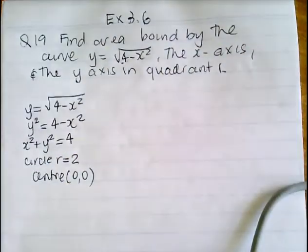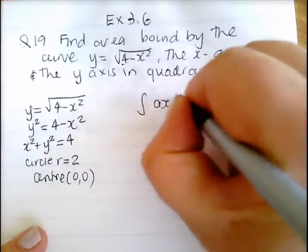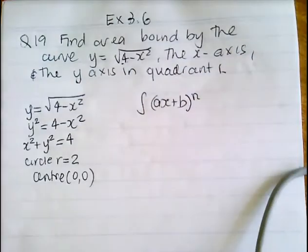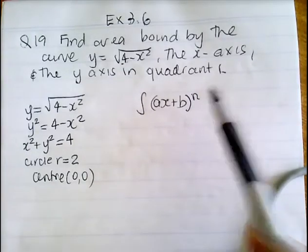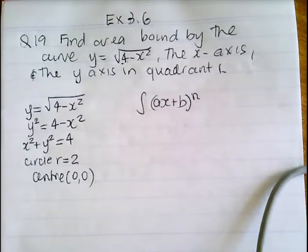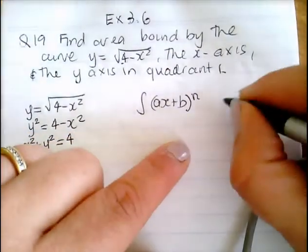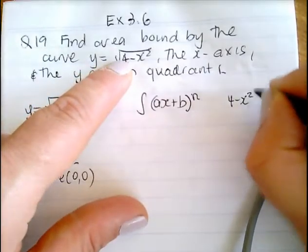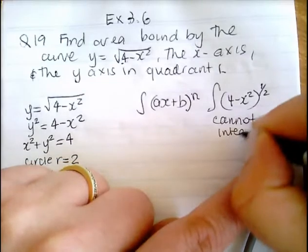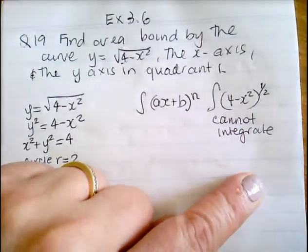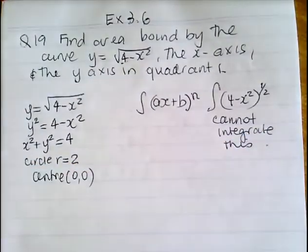Give it a sketch. You cannot integrate this expression — we can only do integrals of the form ax plus b to the power of n. Not ax squared plus b to the power of n. You cannot integrate quadratics with square roots or quadratics with powers — only linear functions with powers. It is not in that form, so you cannot integrate this by normal two-unit methods.